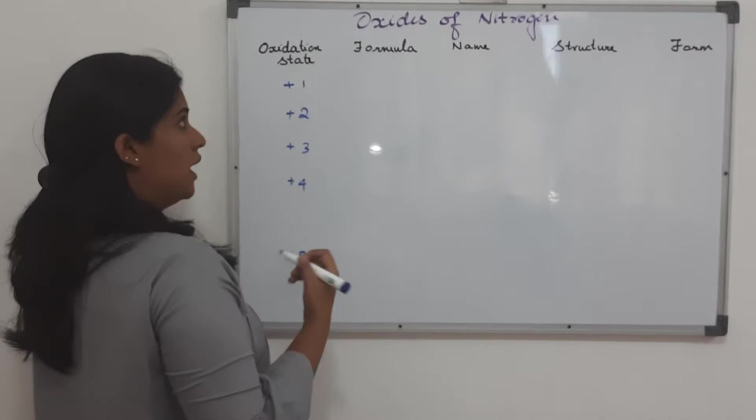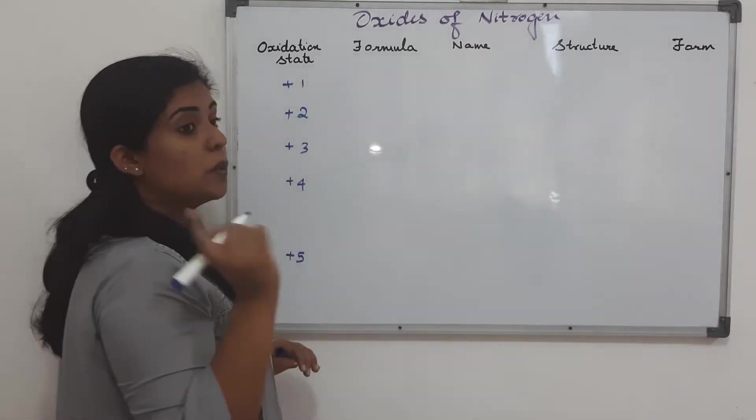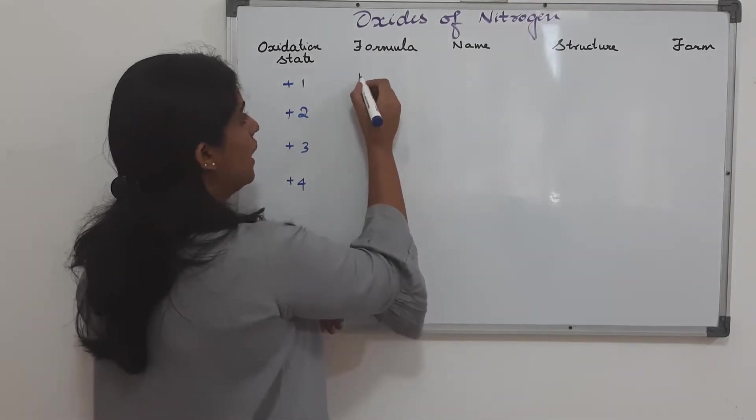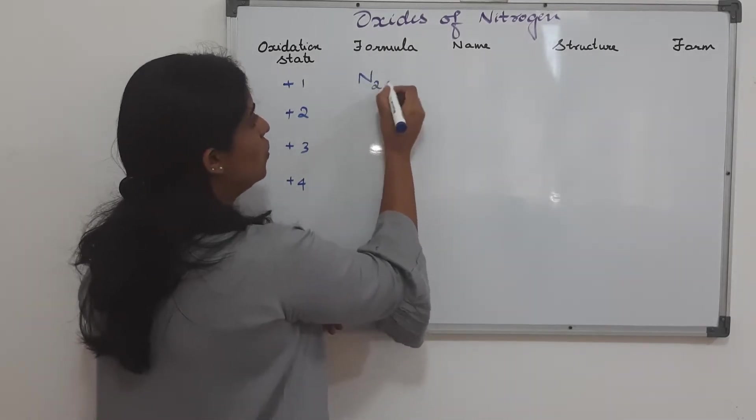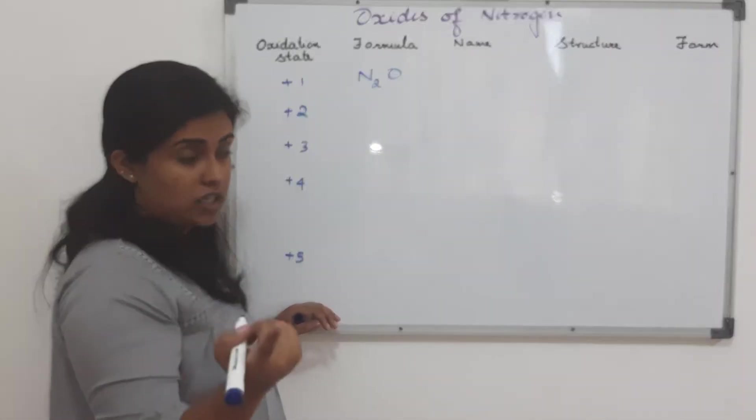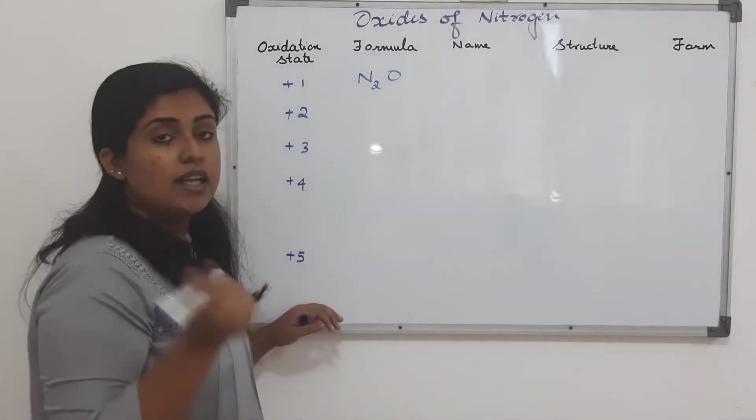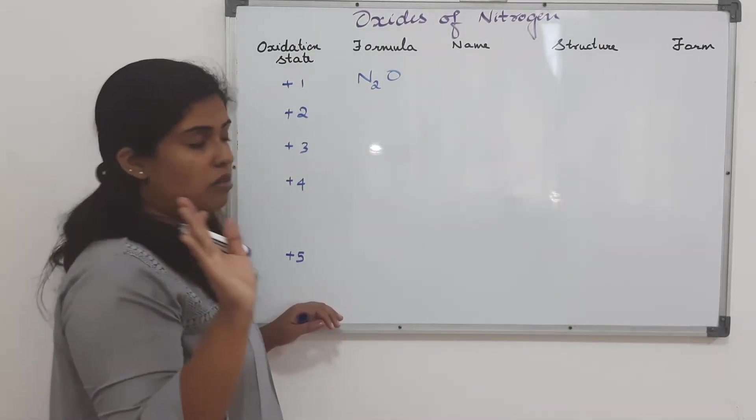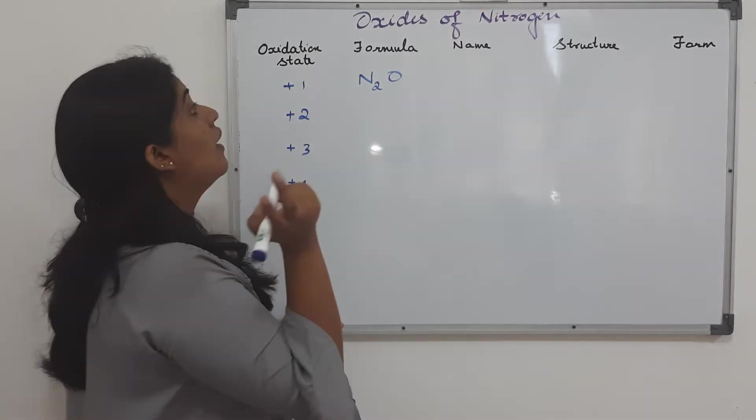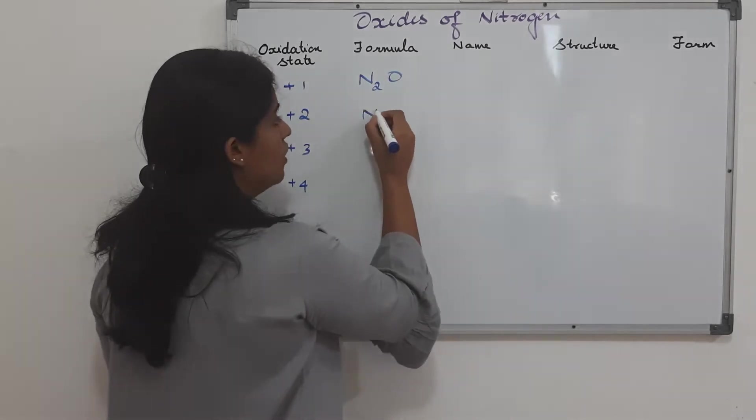First looking into the formula, nitrogen oxide having oxidation state 1 for nitrogen will have a formula of N2O. Because oxygen is in an oxidation state of minus 2 and only we have 2 nitrogens of plus 1 oxidation state, then the charge will be balanced and total will be equal to 0. So this is the formula and for oxidation state 2, the formula will be NO.